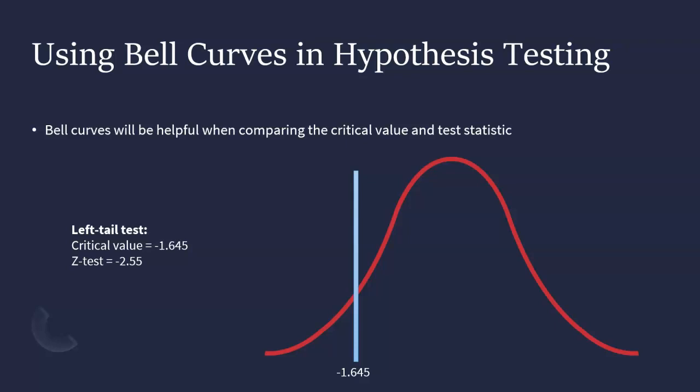Since it's a left-tailed test, that means everything to the left of your critical value is something that we will call the rejection region.